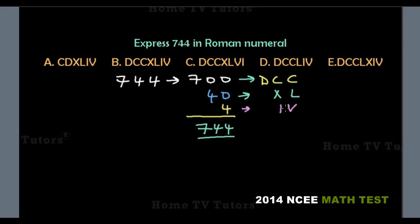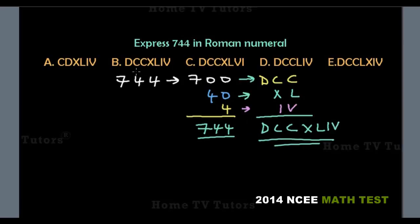When I is written behind V, we have 4 — that is, 5 minus 1, which gives us 4. So now we write the symbols from the top, which is DCCXLIV. So the answer option B is the right answer.